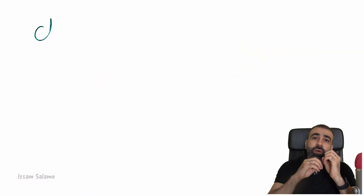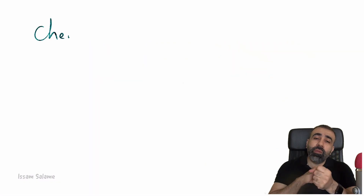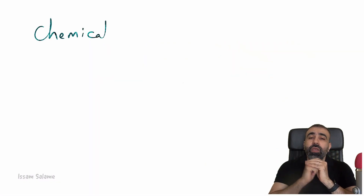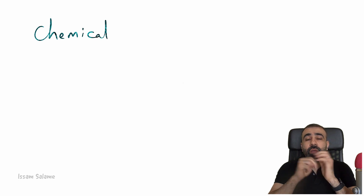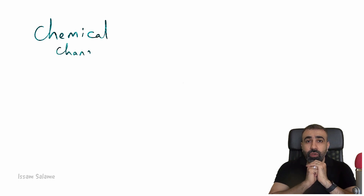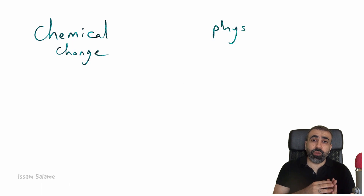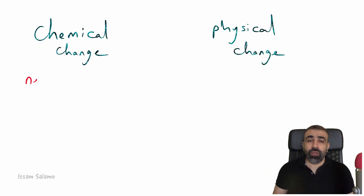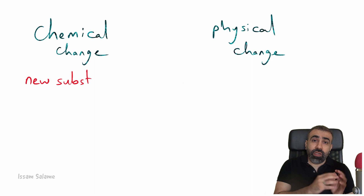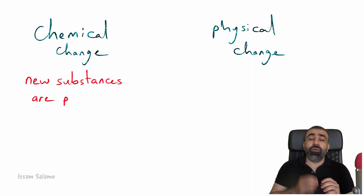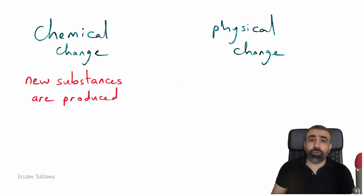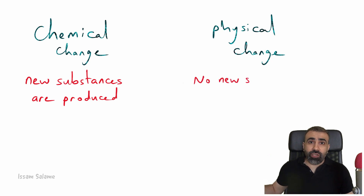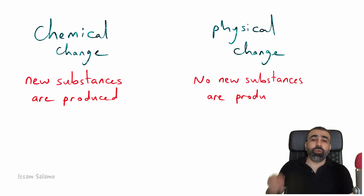Let's talk about chemical change. In fact, we have two types of changes in matter: the chemical change and the physical change. The chemical change is a process where new substances are produced, while in the physical change it's a process where no new substances are produced.